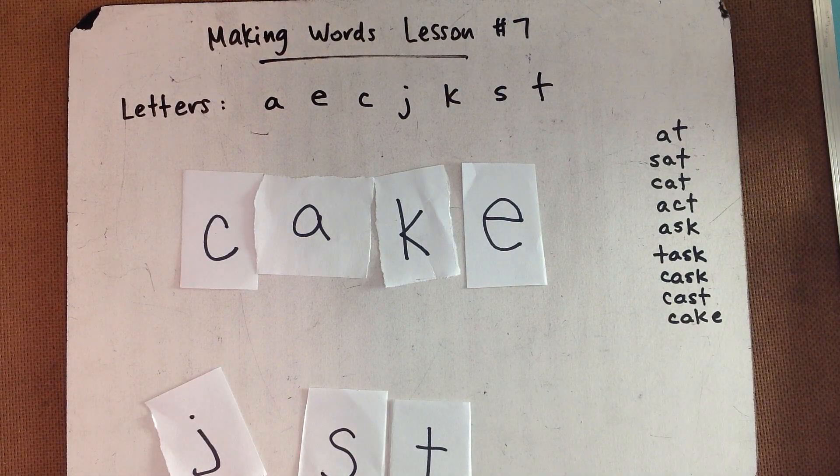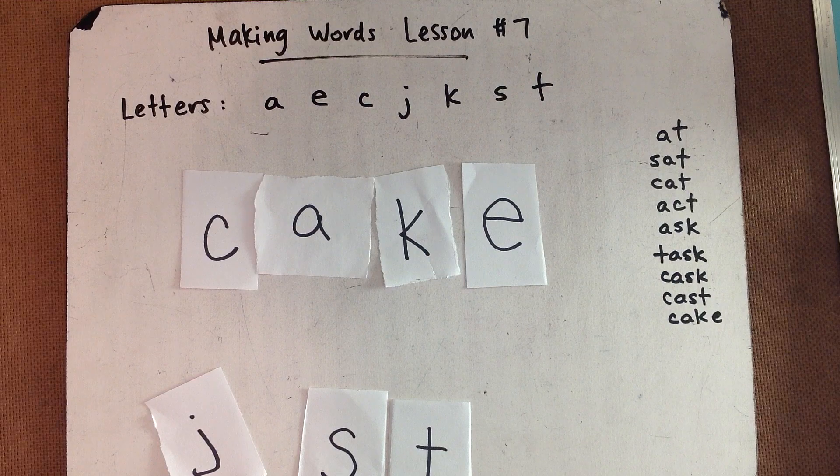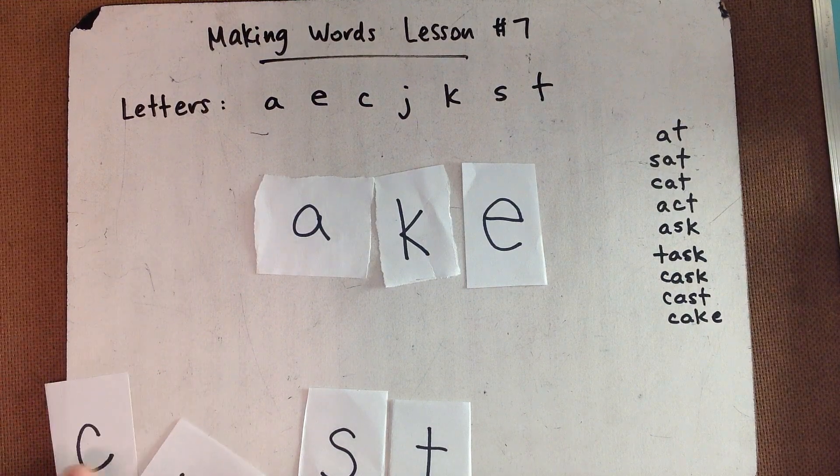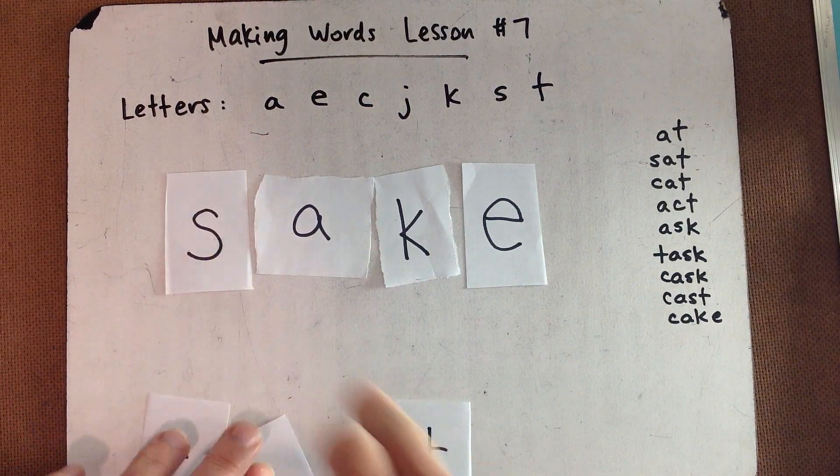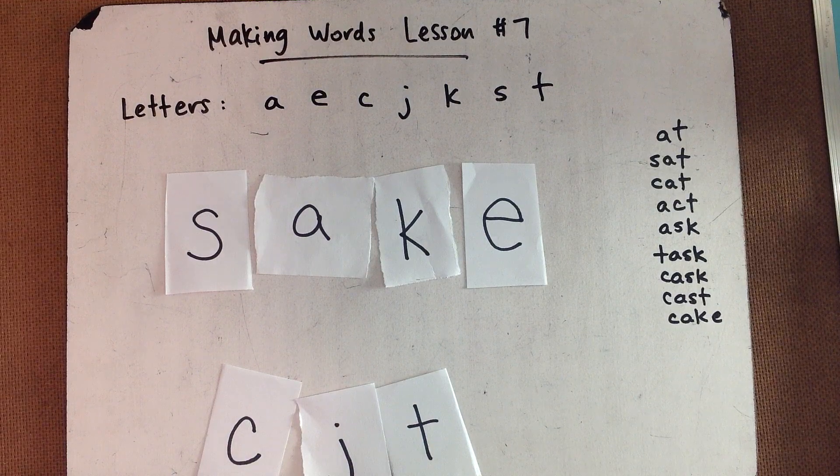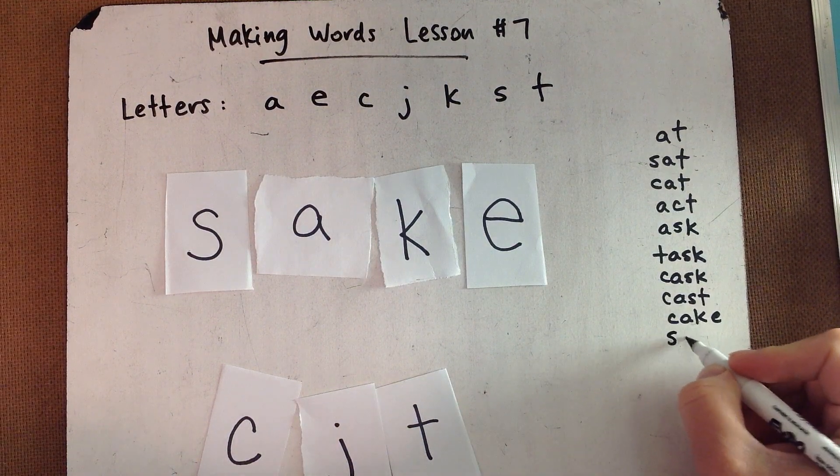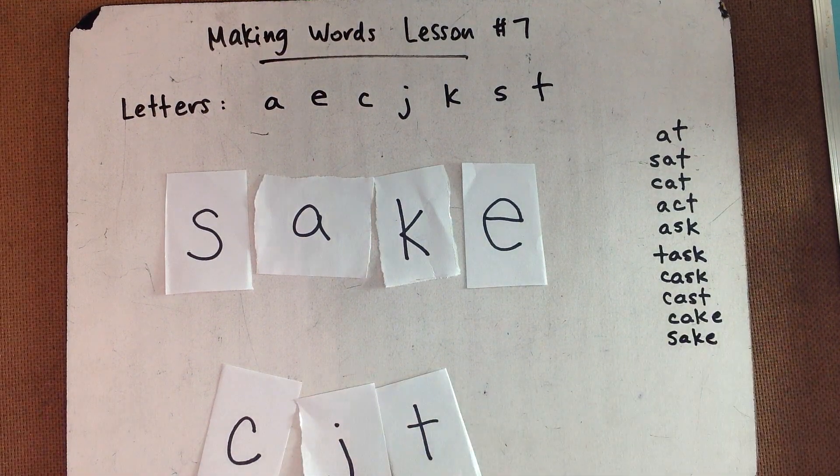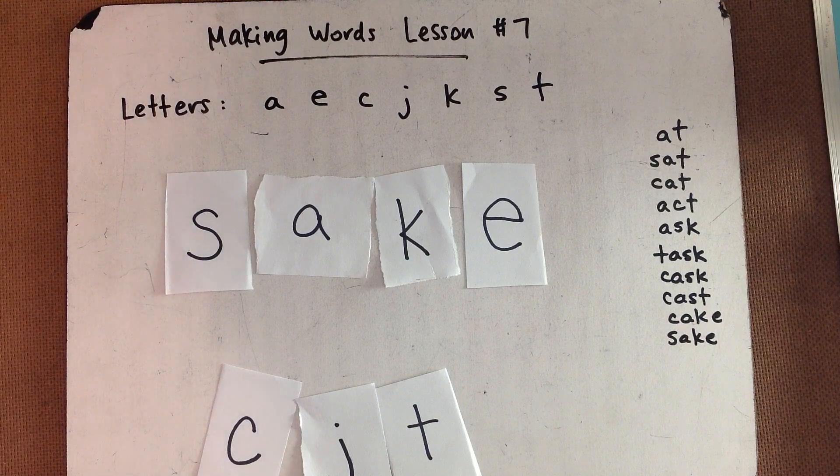And spell the four-letter word sake. For her sake, I didn't say anything. That's just replacing the C with an S. Sake.